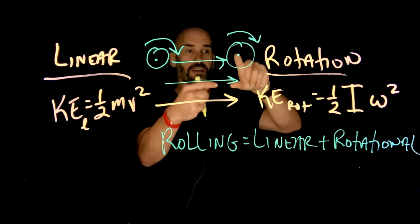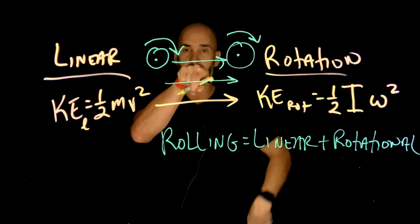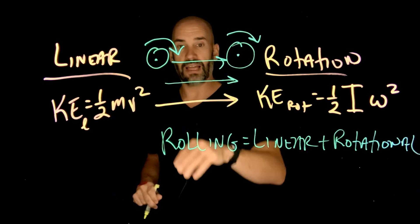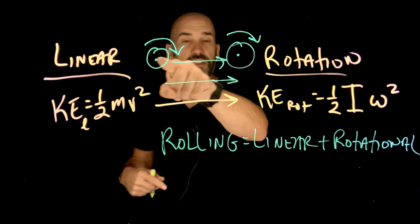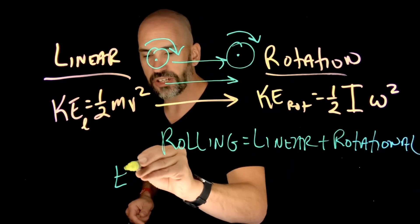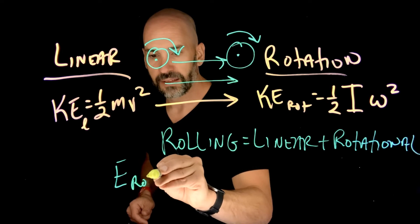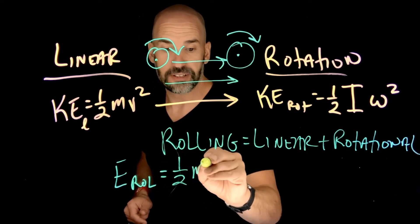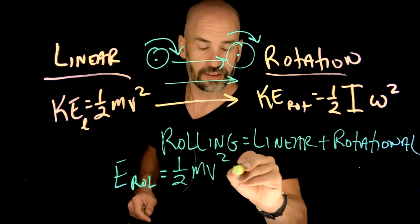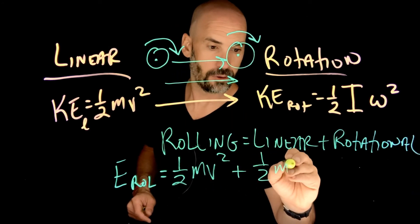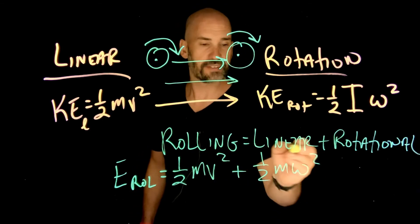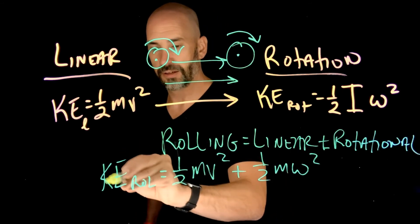Rotational motion would just be like I put a pin in the middle and I spin it, like a merry-go-round. Linear is just I push something and it moves in a straight line. But rolling - it's moving in a straight line and it's spinning at the same time. So you can say that the kinetic energy of rolling is 1/2 mv squared (how fast is its center moving) plus 1/2 Iω squared (how fast is it rotating). So that's the kinetic energy of rolling.